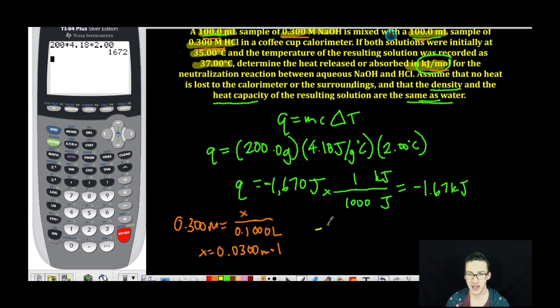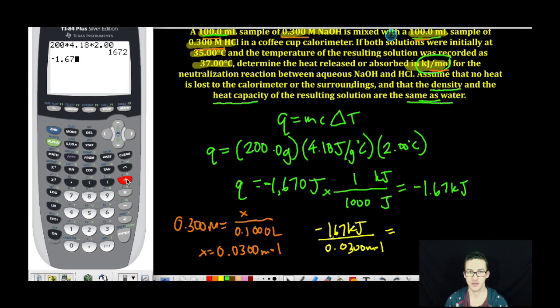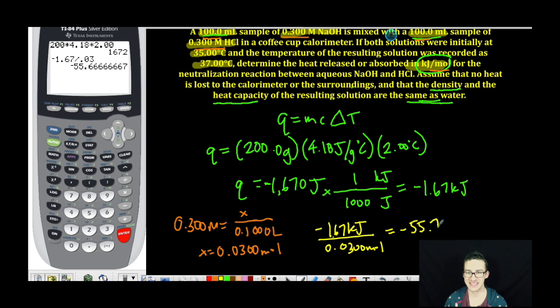So to figure out kilojoules per mole, I just take my amount of kilojoules, 1.67 kilojoules, and divide it by the number of moles that released that much heat. A quick trip to the calculator, it gives me negative 55.7 kilojoules per mole.